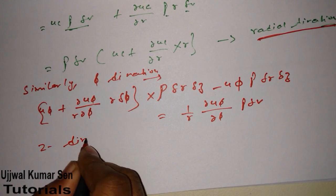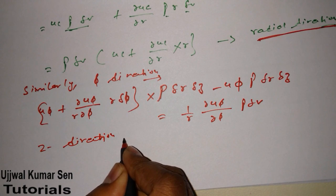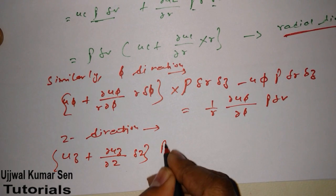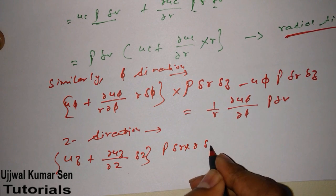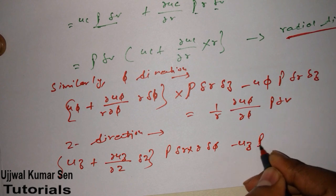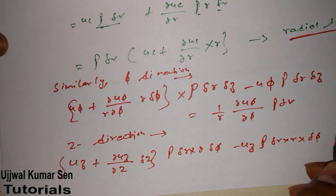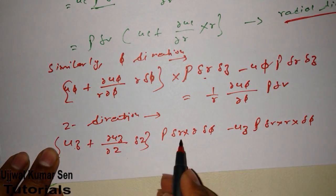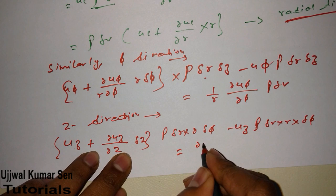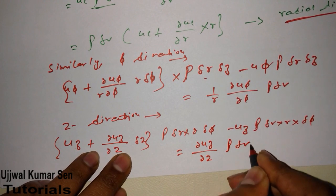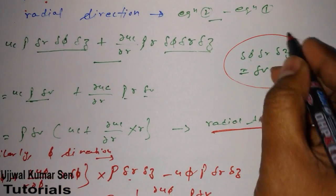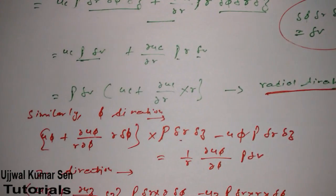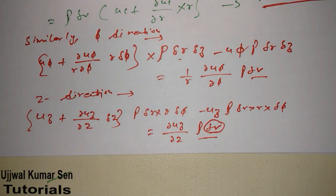For the z direction, we get: (u_z + ∂u_z/∂z · δz) · ρ · δr · r · δφ, minus u_z · ρ · δr · r · δφ. The u_z terms cancel, and we get ∂u_z/∂z · ρ · δV. This happens because δφ · δr · δz equals δV.